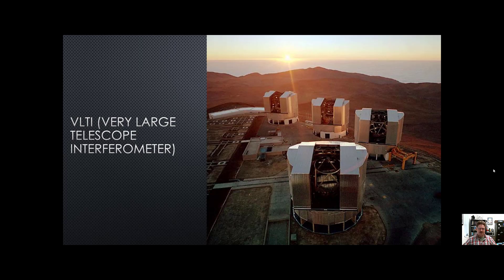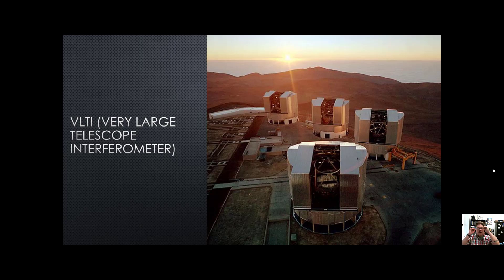A famous recent picture is of the black hole at the center of M87, a giant elliptical galaxy millions of light years away. There is a supermassive black hole in it, and there's a beautiful image of the accretion disk surrounding it. You're looking at something smaller than our solar system from a distance of millions of light years. We were able to do that through interferometry — taking data from telescopes all around the globe to synthesize a telescope the size of the Earth. That is the Event Horizon Telescope.